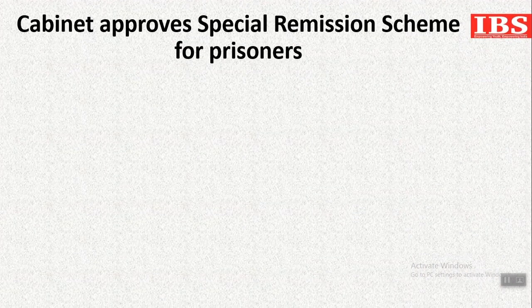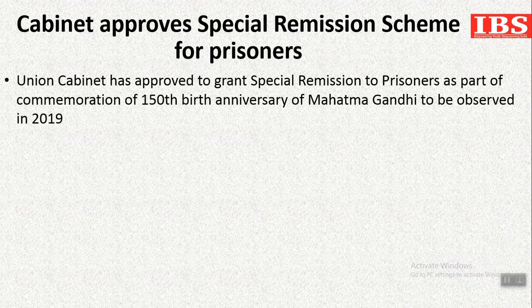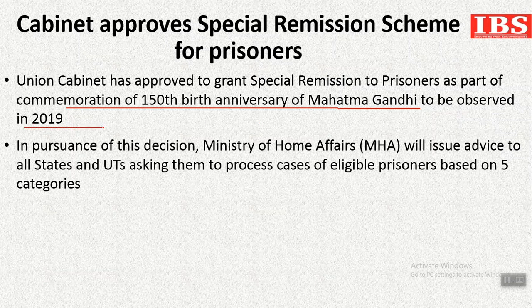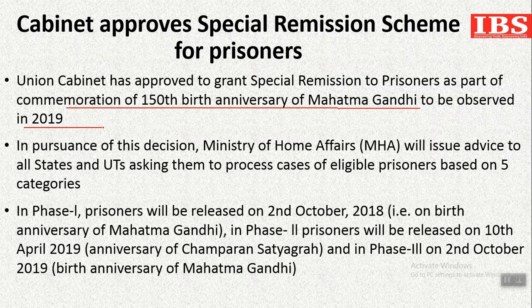Next, the cabinet has approved the special remission scheme for prisoners as part of the commemoration of the 150th birth anniversary of Mahatma Gandhi, to be observed on 2nd October 2019. This decision is considered a homage to the father of the nation and to the humanitarian values Gandhiji stood for. In pursuance of this decision, the Ministry of Home Affairs has issued advice to all states and union territories to make cases of eligible prisoners based on 5 categories.